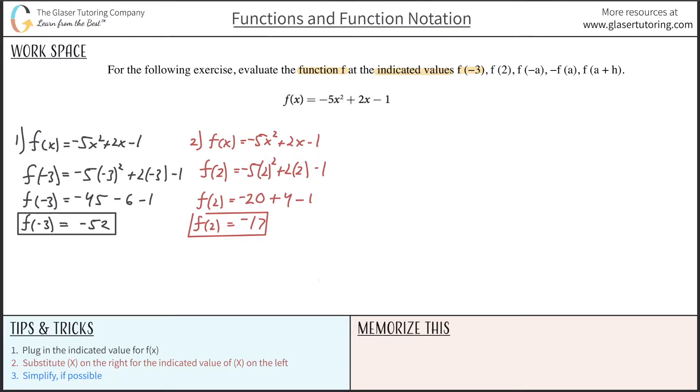Moving on, number 3. Again, rewrite the function f of x is equal to negative 5x squared plus 2x minus 1. Now we're going to substitute in the value of f of negative a. No worries. It seems scary, but follow the process. Substitute in f of negative a. And this thing right in here represents your x value. So your x value is negative a. It sounds weird and it might feel weird. However, it's the same process as what we were doing over here. We're just taking whatever was in those parentheses and substituting it on in for x.